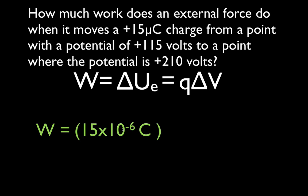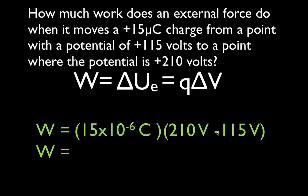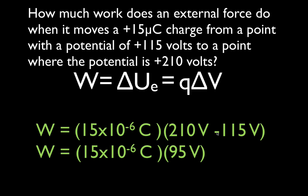We multiply that times the potential difference — final minus initial. The charge is moved from a place with a potential of 115 (the initial) to a place where the potential is plus 210 (the final). So you've got to remember your signs: doing it this way gives positive; switching them gives negative. The potential difference is 210 minus 115, so it's 15 times 10 to the minus 6 times 95 volts positive, and therefore the amount of work done is 1.43 times 10 to the minus 3 joules.